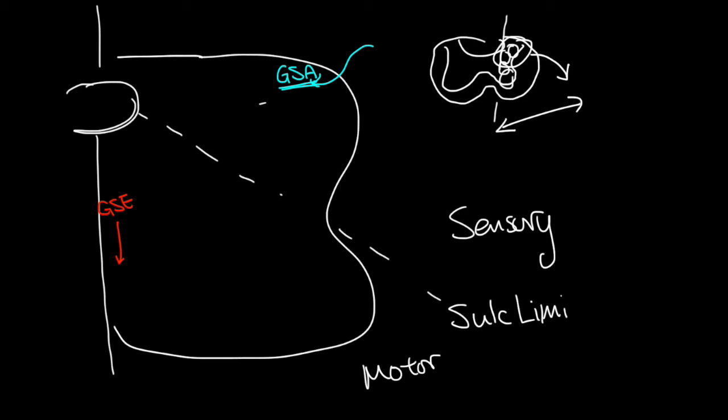Then we still have the same General Visceral Efferent, those motor fibers going down to the organs. And also, you still have General Visceral Afferents. So the sensory fibers from the internal organs that are coming up. But now what we're going to do is add in a few more things.